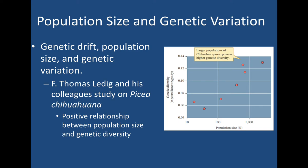A more concrete example of this is seen in a study by Thomas Ledig in Mexico. He and his colleagues focused on Picea chihuahuana, or the Chihuahua spruce, which is found in the mountains of Sierra Madre in Mexico. Picea chihuahuana used to have a larger distribution, but this range is now limited due to changes in climate. Now, the populations of Chihuahua spruce are found only in fragmented areas.